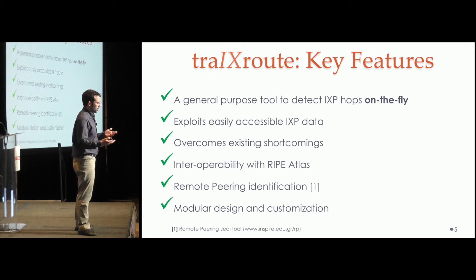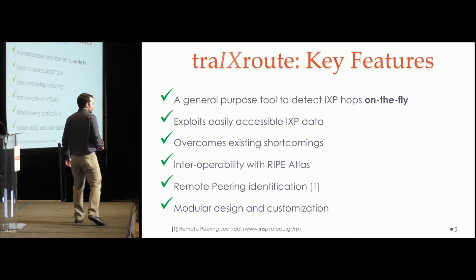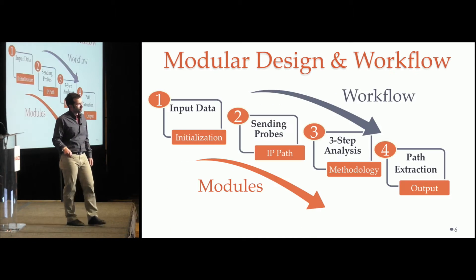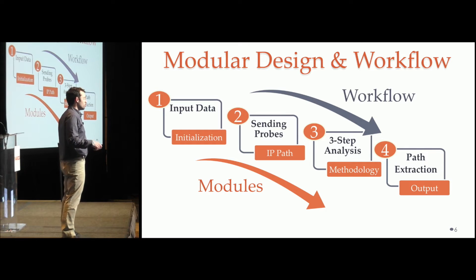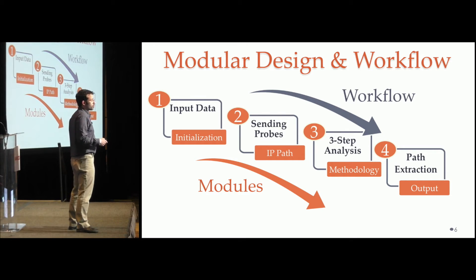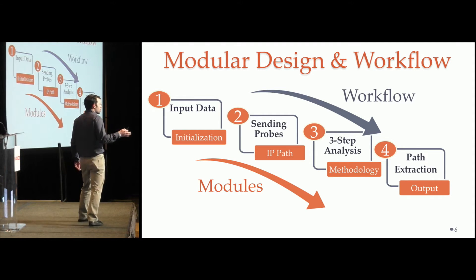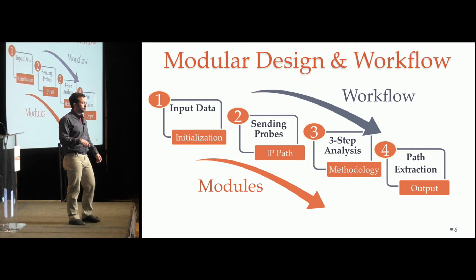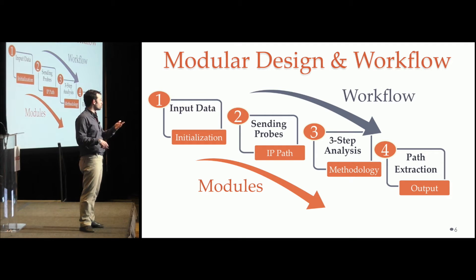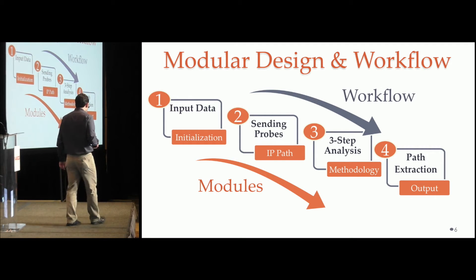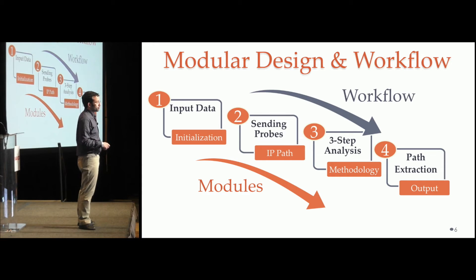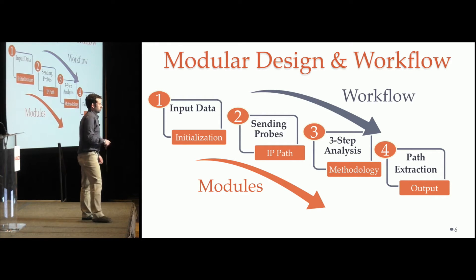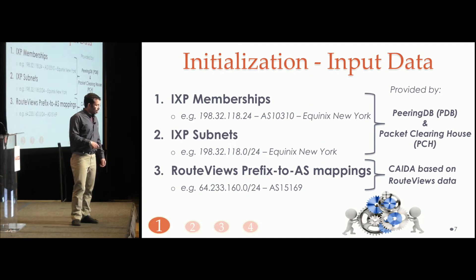Finally, we followed a modular design, which allows us to easily extend the tool with new IXP detection capabilities and offers flexibility to configure the tool based on user needs. There are four main modules: in the first module, we have the initialization with input data; in the second, we receive an IP path by sending a probe; in the third — the most important — we have deployed our methodology to decide where and if we have an IXP crossing; and in the fourth module, we formulate all the output of the tool.